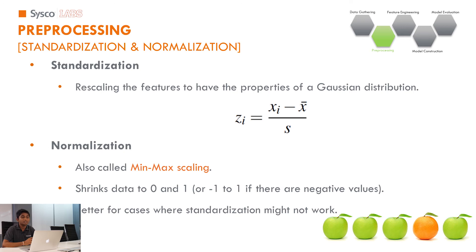Another thing we do in data preprocessing is standardization and normalization. In machine learning models, we compare data fields and try to find the correlation with our target value. In order to do that, we need our data in some kind of same format. Standardization is basically Z-score normalization — we rescale the features to have properties of a Gaussian distribution. Normalization, known as min-max scaling, shrinks our dataset to between 0 and 1, or -1 to +1. Using these techniques, we can convert our dataset into a common format and identify patterns.